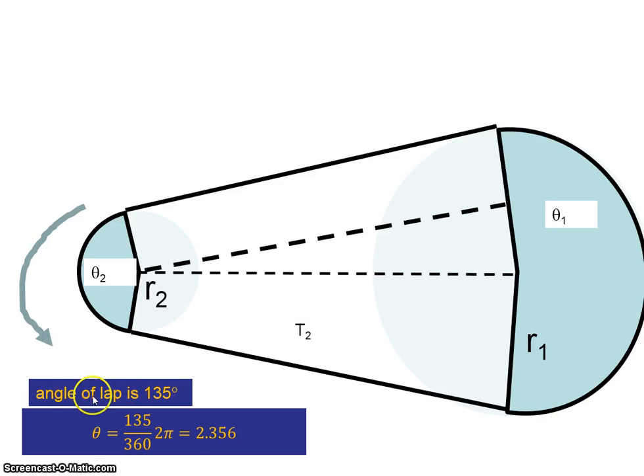We were told that the angle of lap was 135 degrees. That is always the angle on the smaller pulley. To convert 135 degrees to radians, we get 135 as a fraction of 360 and multiply it by 2π.